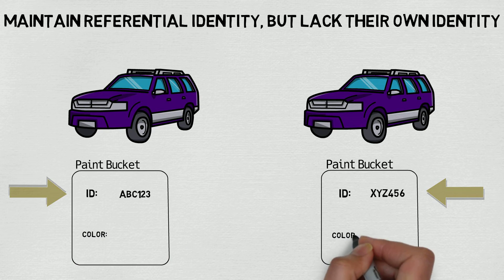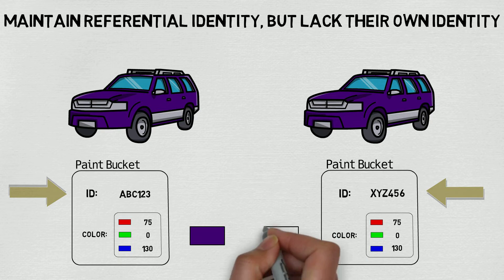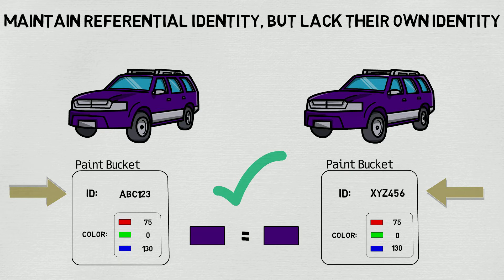However, even though the cars were painted using different paint buckets, we can still compare the two color value objects and determine that both cars are the same color. Even though they came from different paint buckets, the color is the same. This is referential identity.